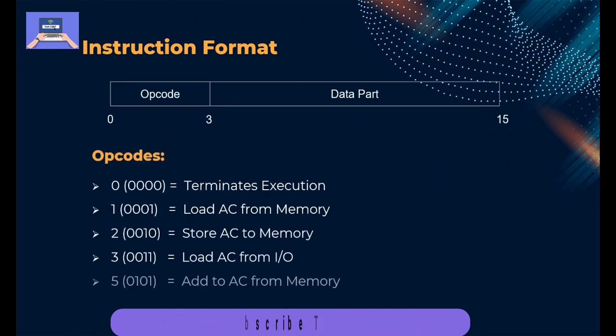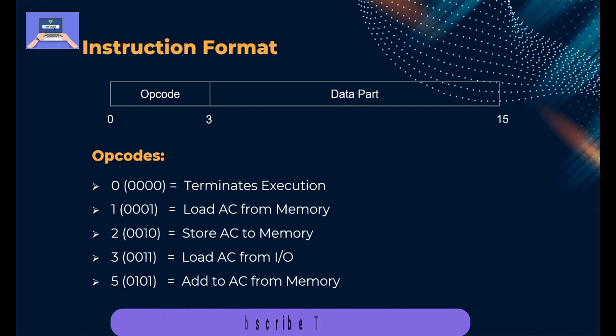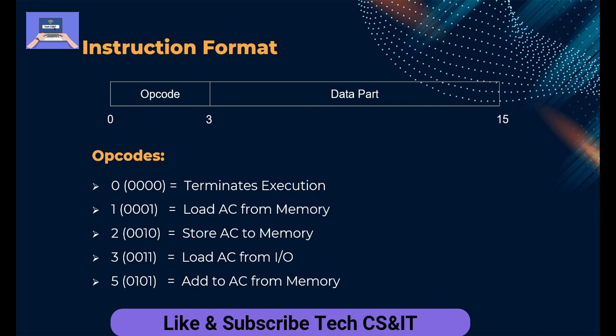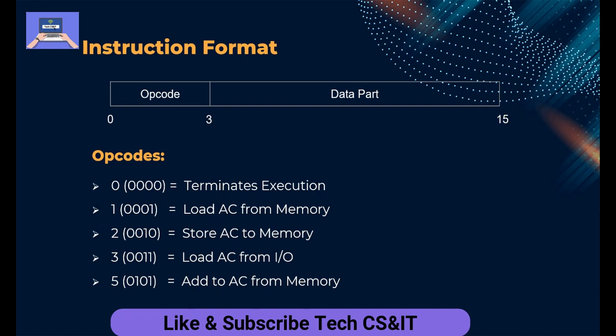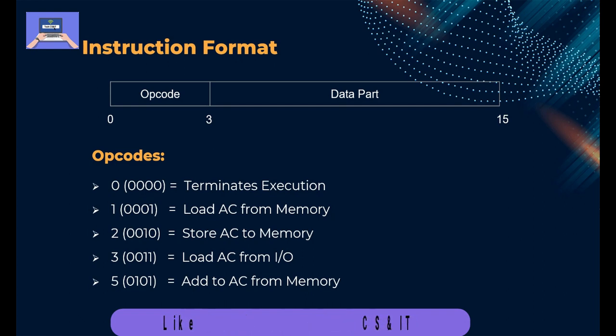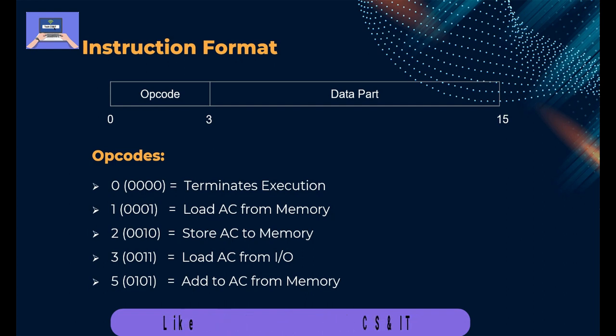Regarding instruction format: as mentioned, 16 bits are required to store a single instruction. These 16 bits are divided into two parts — a 4-bit opcode and a 12-bit data part. The data part can contain an address referring to another memory location or data on which execution is performed. The opcode tells what operation to perform on the data — whether to add it, write it to memory, or read/access it.